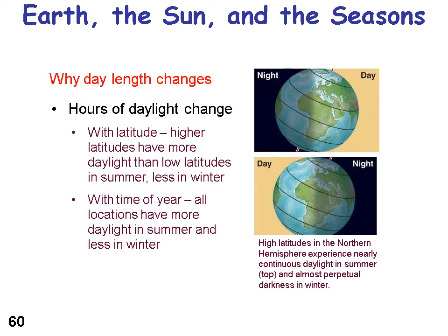The hours of daylight change with latitude and with time of year. Higher latitudes — further toward the North Pole — have more daylight than low latitudes in the summer and less in the winter. All locations have more daylight in the summer and less in the winter.